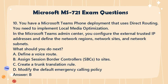Question 10. You have a Microsoft Teams Phone deployment that uses direct routing. You need to implement local media optimization. In the Microsoft Teams Admin Center, you configure the external trusted IP addresses and define the network regions, network sites, and network subnets. What should you do next? a. Define a voice route. b. Assign session border controllers (SBCs) to sites. c. Create a Trunk Translation Rule. d. Modify the Default Emergency Calling Policy. Answer: b.